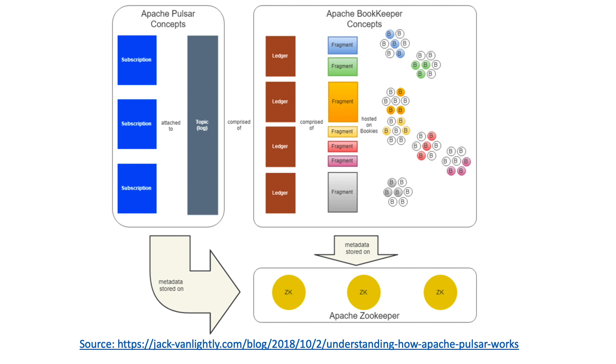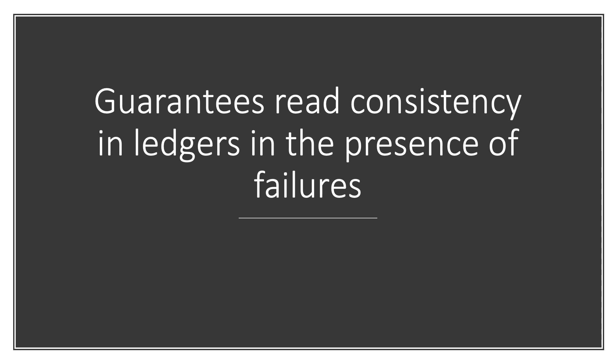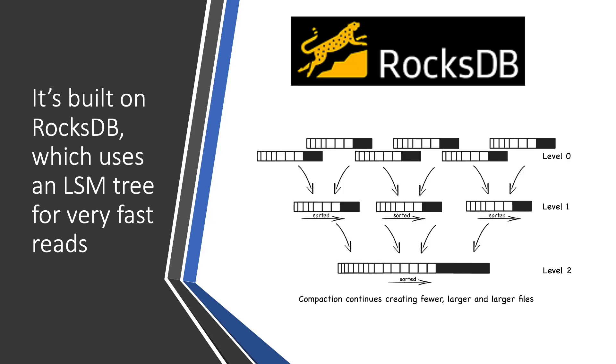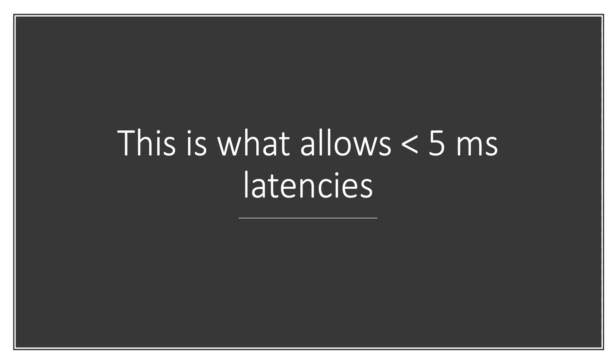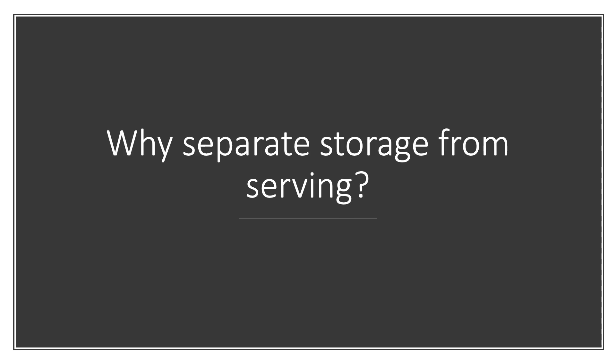We also see that subscriptions and their metadata are stored in Apache Zookeeper, along with ledger metadata. The topic is broken down into ledgers which are split into fragments, and each fragment is distributed into an ensemble of bookies — Bookkeeper nodes. You can configure how many bookies are required to retain that data. Bookkeeper guarantees read consistency in ledgers even in the presence of failures. The current version is built on RocksDB, which uses an LSM tree — very fast and designed for these use cases, enabling latencies of under 5 milliseconds.